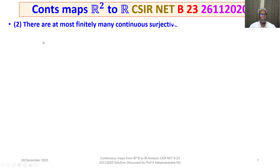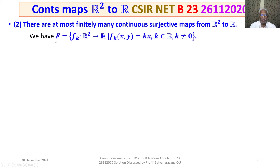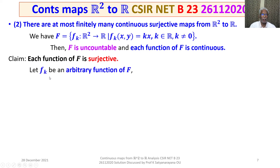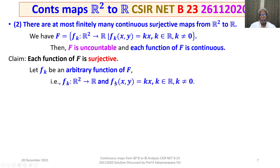Now let us consider the statement given under option 2: there are at most finitely many continuous surjective maps from R square to R. We have capital F as the set of all functions F_K from R square to R, where F_K(x, y) = K·x, with K belonging to R and K not equal to 0. We have already seen that F is uncountable and each function of F is continuous. We claim each function of F is surjective.